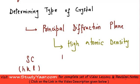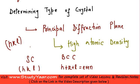For a BCC structure, your principal diffraction planes are the planes wherein h-plus-k-plus-l is equal to an even number. So all planes h-k-l of the type where h-plus-k-plus-l is even is going to be a principal diffraction plane.